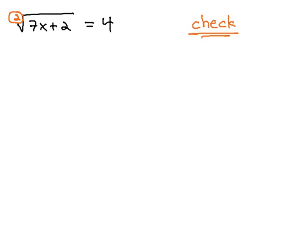So whenever we have an even index, we're going to be careful that we actually check our answer back in the original equation. But that's at the end. For now, to get rid of the second root, we need a second power on both sides.